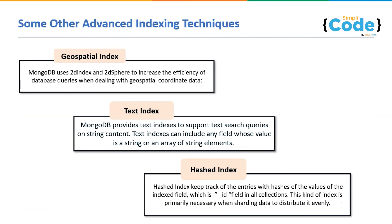In addition to that, we have three other advanced indexing techniques in MongoDB. First is geospatial index — MongoDB uses 2D index and 2D sphere to increase the efficiency of database queries when dealing with geospatial coordinate data. Next, we have text index, which provides support to text search queries on string content — text indexes can include any field whose value is a string or an array of string elements. Finally, we have hashed index, which keeps track of entries with hashes of the values of the index field, almost always the underscore ID field. This kind of index is primarily necessary when you are sharding data to distribute it evenly.